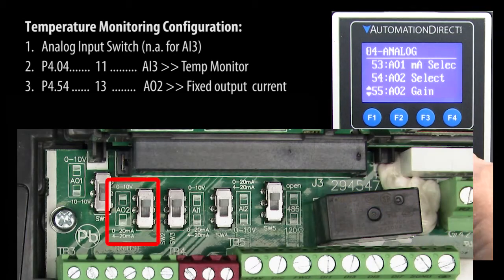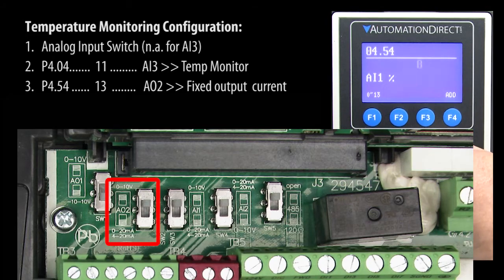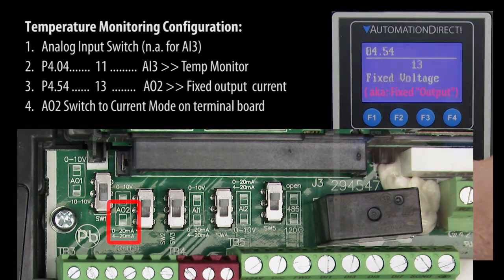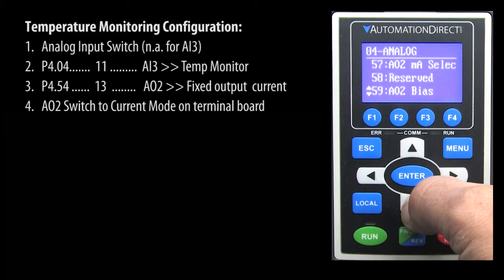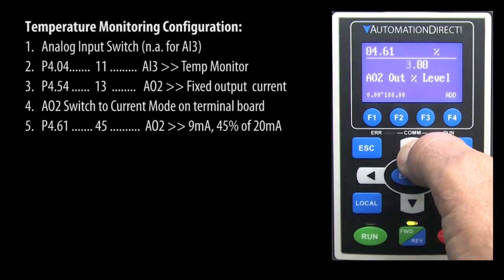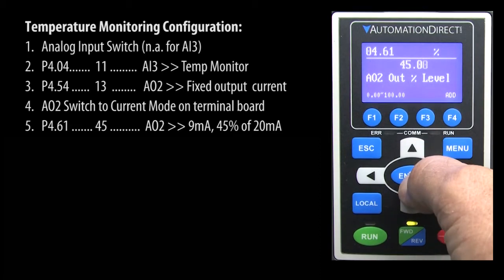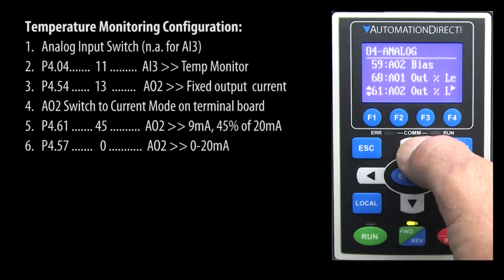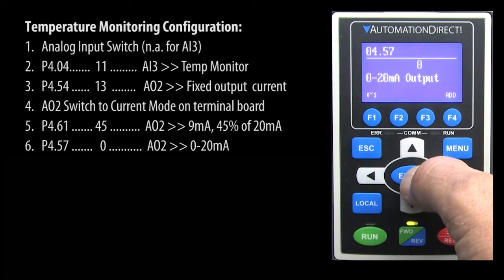Analog output number 2 needs to output a fixed current, so we need to make sure his switch is set for current output. And we want to set the fixed output at 9 mA, which is 45% of the 0 to 20 mA range. Of course, make sure analog output 2 is set for 0 to 20 mA, not 4 to 20 mA.